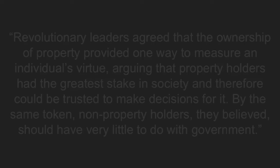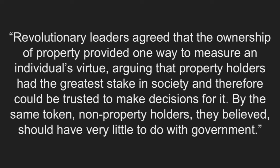These representatives would then make laws they saw fit for the people. For a republic to run smoothly, its citizens that vote must be virtuous. According to U.S. History by OpenStax, revolutionary leaders agreed that the ownership of property provided one way to measure an individual's virtue, arguing that property holders had the greatest stake in society and therefore could be trusted to make decisions for it. By the same token, non-property holders, they believed, should have very little to do with the government. This meant that people who weren't property owners wouldn't have a say in who their representatives would be, giving even more power to the elite. Therefore, the Republican revolutionaries envisioned a society whose laws would be in favor of the elite.